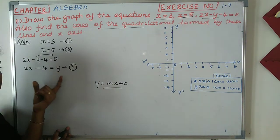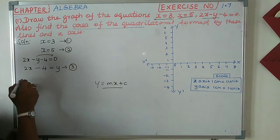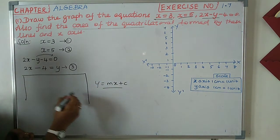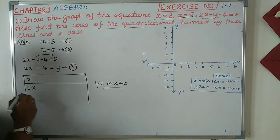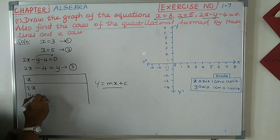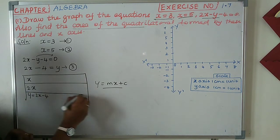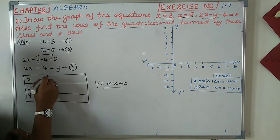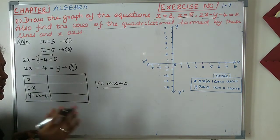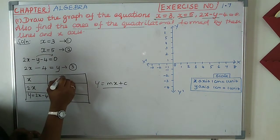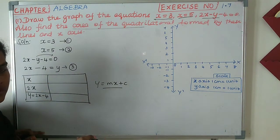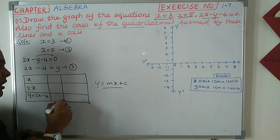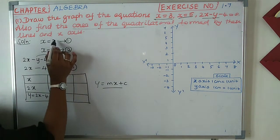We have to calculate the table and values. We have to calculate the x values. 2x and y equal to 2x minus 4. We have to calculate three values of x.